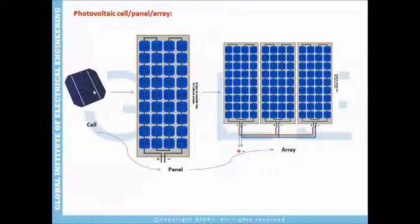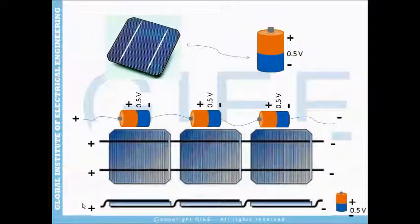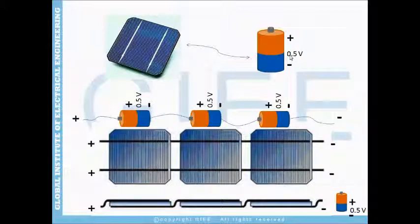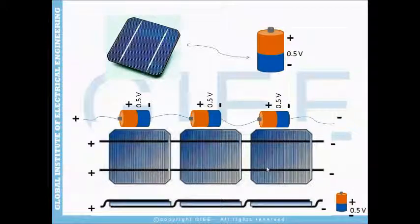This is the photovoltaic cell. If we connect cells together we get a panel, and if we put panels together we get an array. A photovoltaic cell gives us around 0.5 volts. We can think of it like a battery which gives us a DC voltage — around 0.5 volt DC — and it has a positive terminal and a negative terminal.